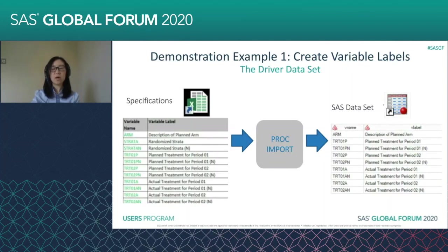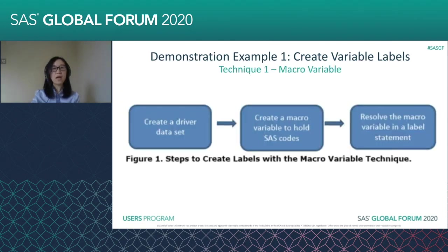To do this, we need a driver dataset. We use PROC IMPORT to import the specification file into a SAS dataset. In the SAS dataset, we only keep two variables — vname for variable name and vlabel for variable label. Now let's try to do the job using the first technique, the macro variable technique. After we create a driver dataset, we interact with it to create a macro variable to hold the SAS code, and finally we resolve the macro variable after a label statement within a data step.